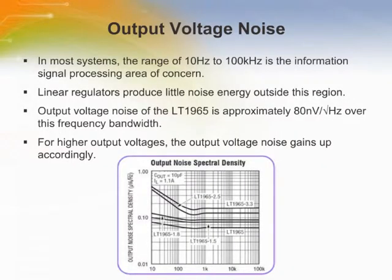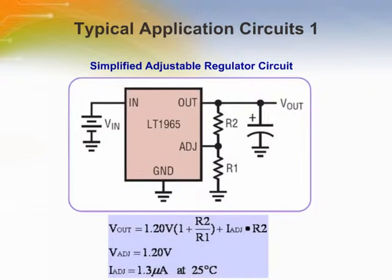These regulators have very low output noise, making them ideal for sensitive RF and DSP applications. In most systems, the range of 10 to 100 kilohertz is the information signal processing area of concern. The LT1965 is designed to provide low output voltage noise over this bandwidth while operating at full load. Output voltage noise is approximately 80 nV per root-hertz over the frequency bandwidth for the adjustable LT1965, and for higher output voltages, the output voltage noise increases accordingly.